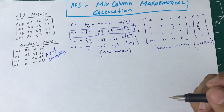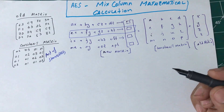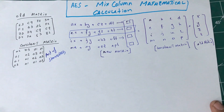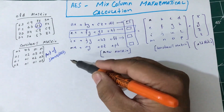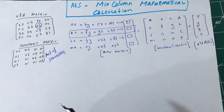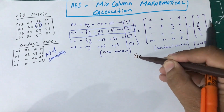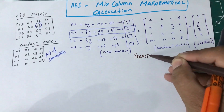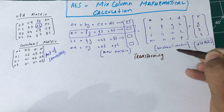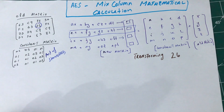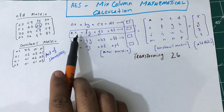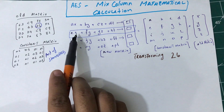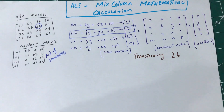Let's transform a value using the MixColumns transform. I want to transform value 26. The first thing I need to do is find the location of 26 — it's the second one — so this is the equation I'm going to use. Now, what is my constant matrix?